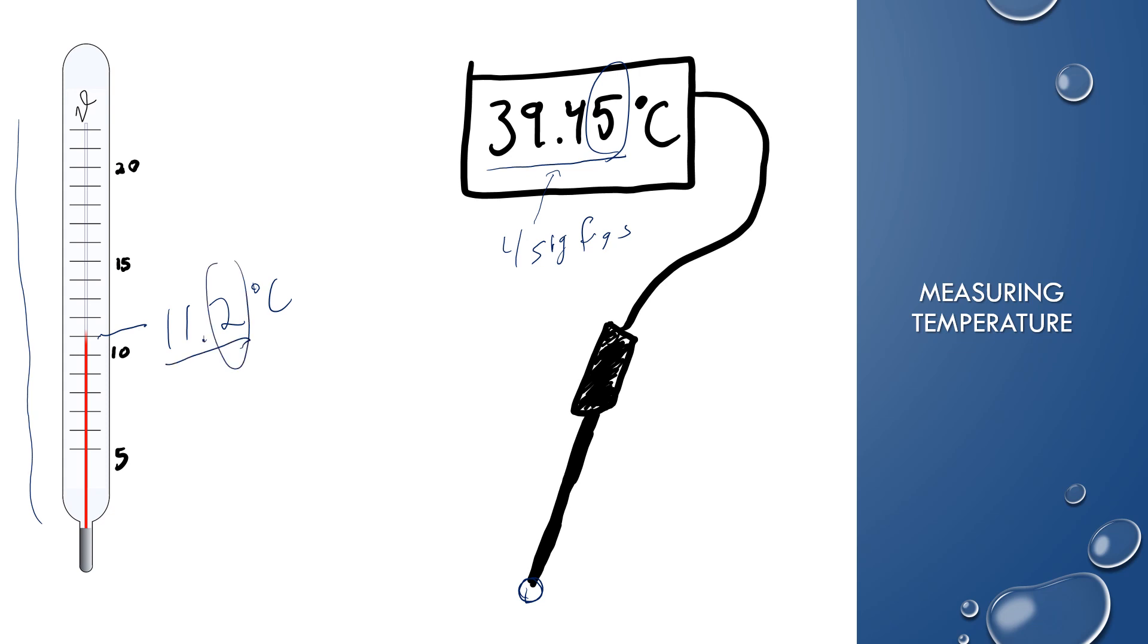Some people will say that when you're estimating, your estimated digit should be a zero or a five. I don't think that's 100% necessary, as long as you're consistent with how you are measuring and estimating, and you're using the correct number of significant digits.